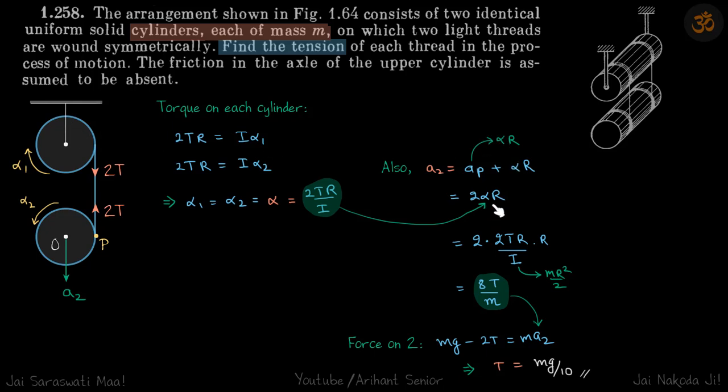This becomes 2 alpha r, and now we'll put the value of alpha here and we get a2 in terms of tension. Put that value here, and then we'll only have one variable, tension, and we'll get the value of it.